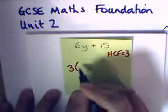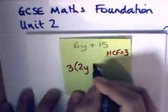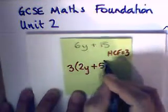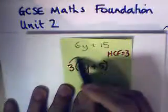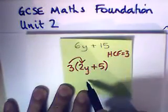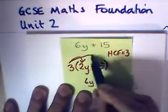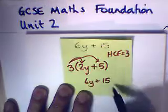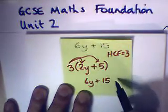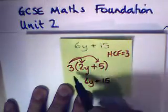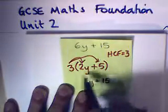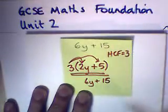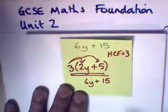3 outside the brackets, 2y plus 5. This works out because 3 times 2 would give you 6y and 3 times 5 would give you 15. So we can see we can get back to the original answer. We haven't actually changed anything, we've just written it in a different way. So that is the expression factorised.